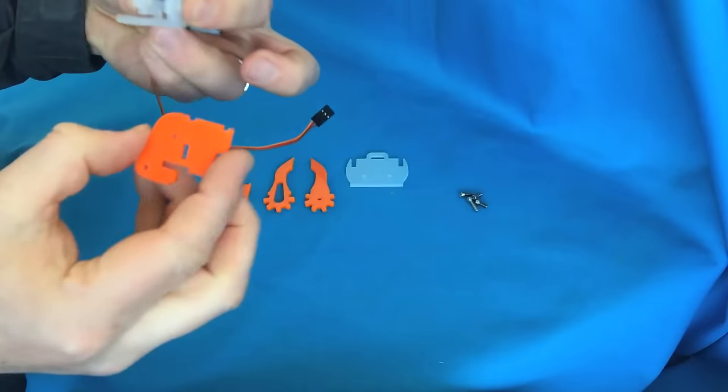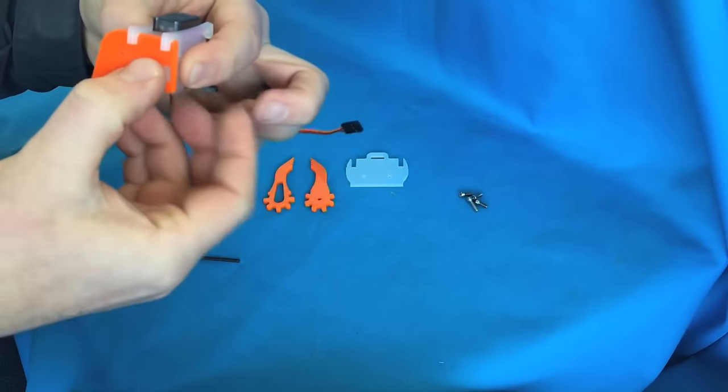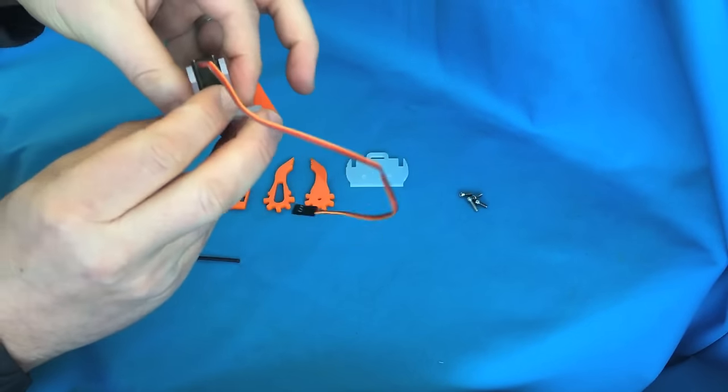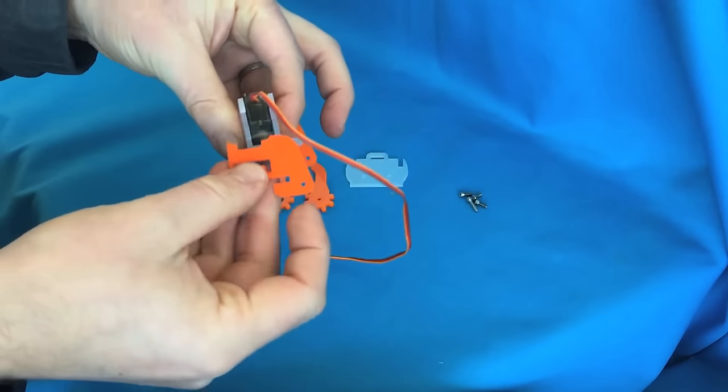Take the side pieces and check that you've got the correct holes. They should just push into the top, hook under, and then lever down onto the side.